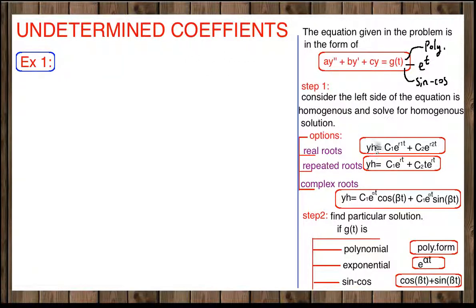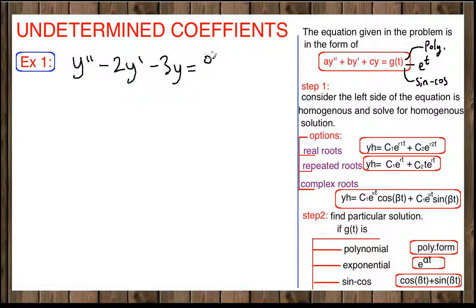Let's go to example one and see step by step how we solve these kinds of problems. Our equation is y double prime minus 2y prime minus 3y equals 9e to the 2t. Step one is to find the homogeneous equation, which is y_h.